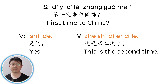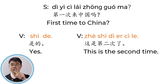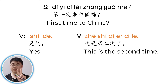第一次来中国吗? 一 means one. 第一次 means first time. 来 means come. 中国 means China. 吗 is a question word. 第一次来中国吗 — is this your first time to China? Answer: 是的 — yes. Another way: 这是第二次了 — no, this is the second time. 第二次 means second time.